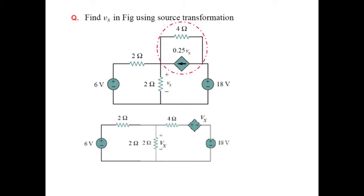We can convert them into a voltage source. The value of the voltage source is 4 multiplied by 0.25 Vx, which gives Vx, and this resistance comes in series. This is the replacement of the current source and resistance in parallel.